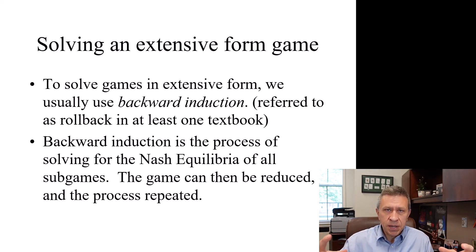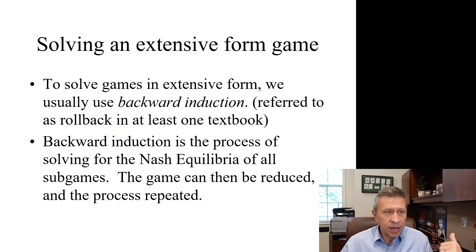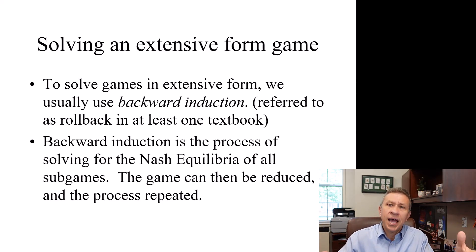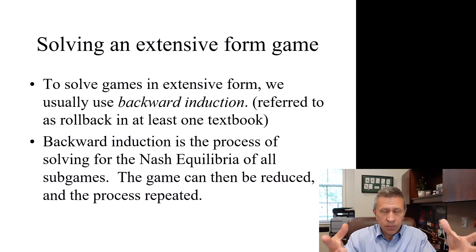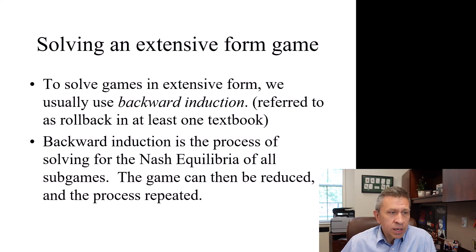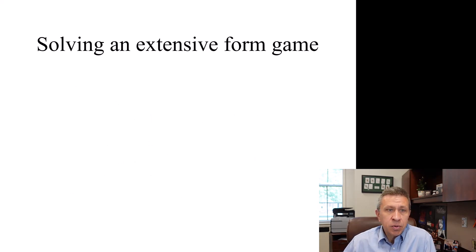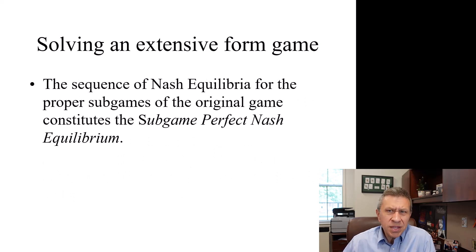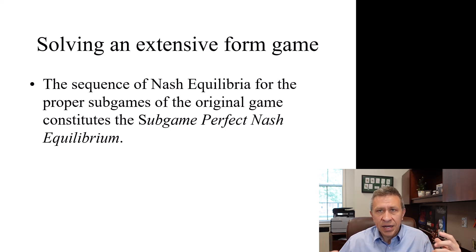Sub-games are the individual decisions people have at various points within a tree diagram. Once you solve a sub-game, you know what happens at that particular spot in the game, and that can be used elsewhere. You repeat until you get to the beginning of the game and realize what somebody should do at the very start. This is called rollback equilibrium, or sub-game perfect Nash equilibrium — where you're finding the sequence of Nash equilibria throughout a particular game.